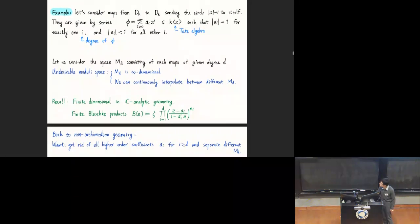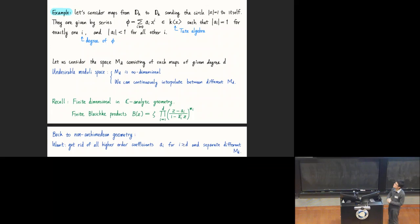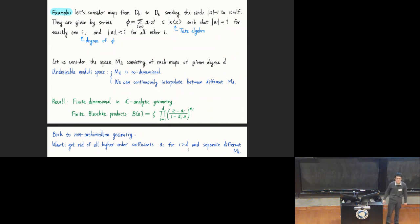So let's go back to non-Archimedean geometry. We want to get rid of all this. What's really causing the problem for us is that we have too much freedom, and we want to get rid of as much freedom as we can. One way is to just get rid of all the higher order coefficients a_i for i greater than d. In this way, we think maybe we can separate all these moduli spaces M_d.